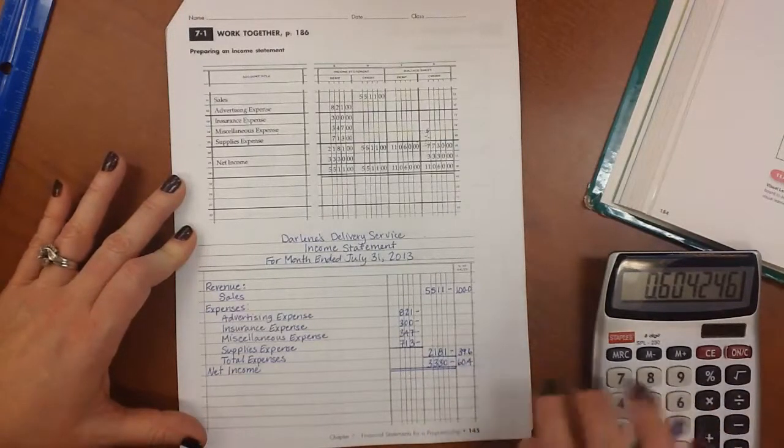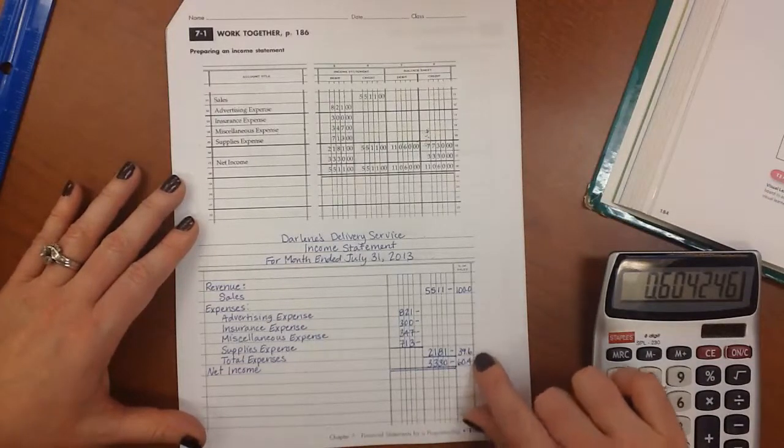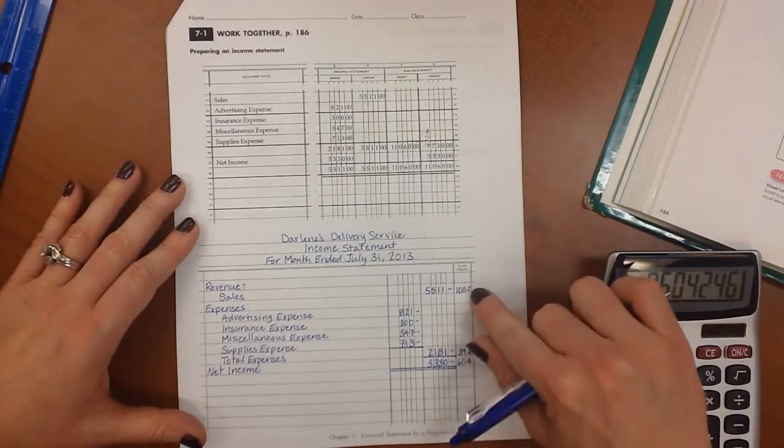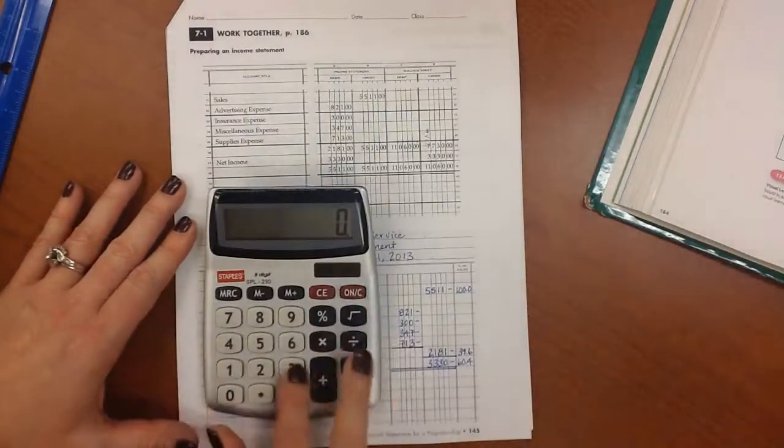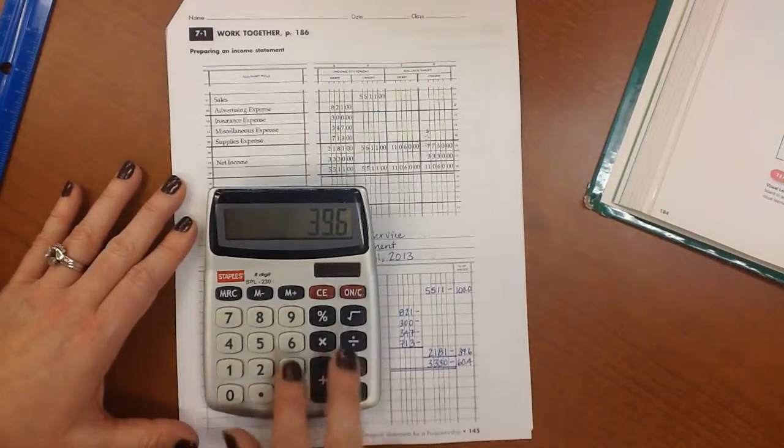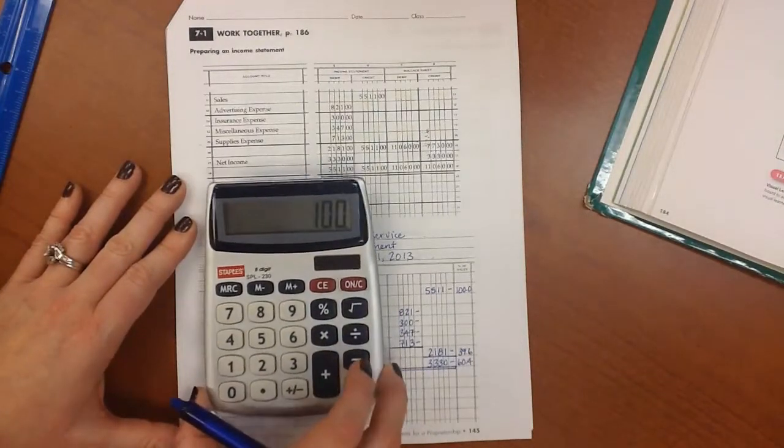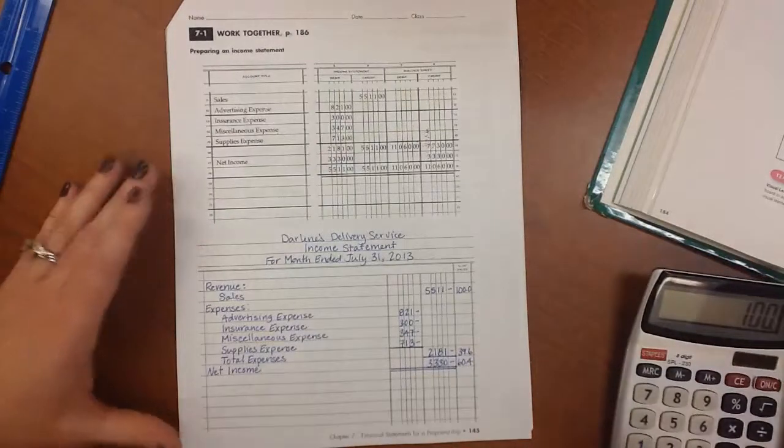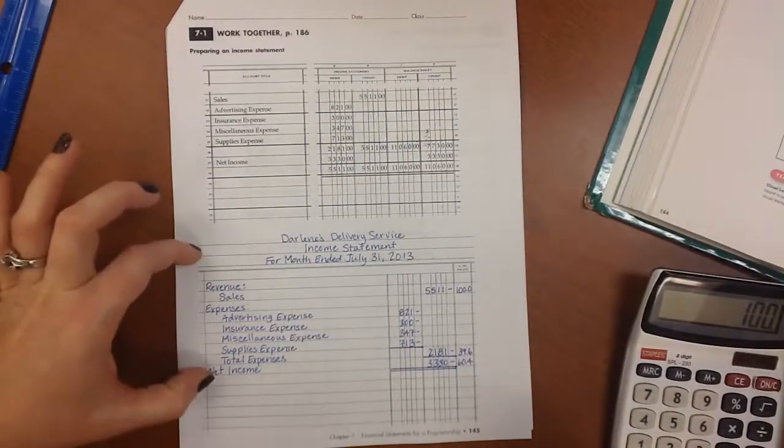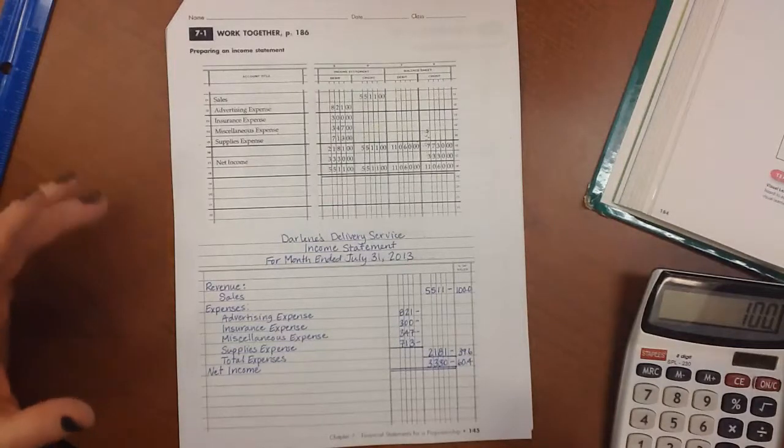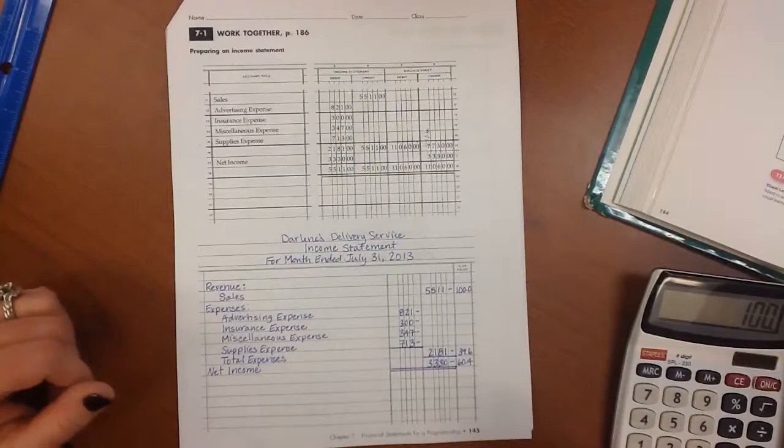Now, we can tell if we did our component percentages right if these two numbers added together equals 100%. So we can run that through our calculator. 39.6 plus 60.4 equals 100, so our component percentages are correct. All right, you guys go ahead and do the on your own using the same steps that we just used on this document right here.